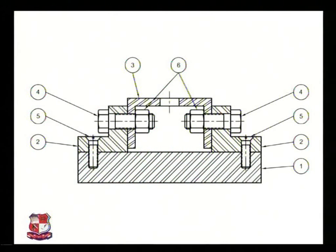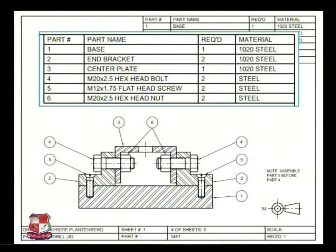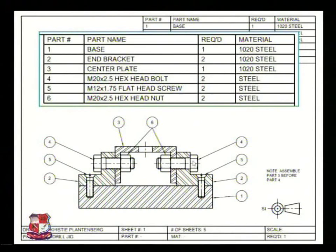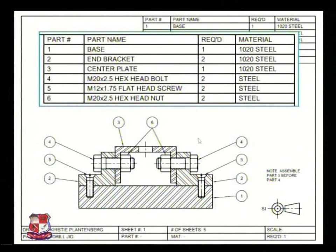Part numbers are filled: 1, 2, 3, 4, 5, 6. This is the bill of material for this component. Component number 1 is the base, component number 2 is the end bracket, component number 3 is the center plate, number 4 is a hexagonal headed bolt, number 5 is a head screw inserted over here, number 6 is a head nut - two head nuts are there, two head screws, and two hexagonal headed bolts. End bracket 2, one center plate, and one base - which is made up of steel.